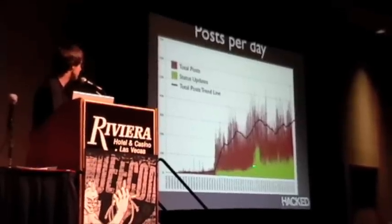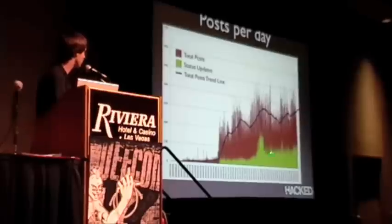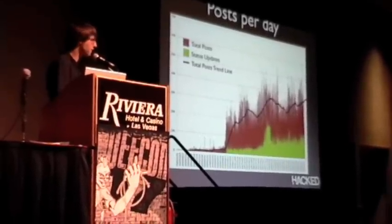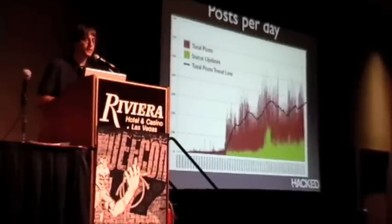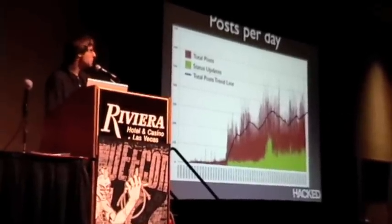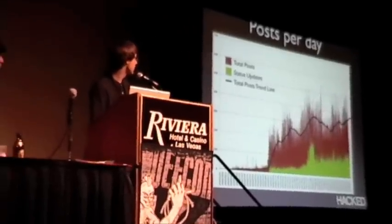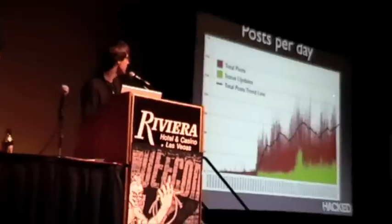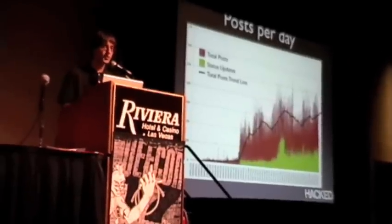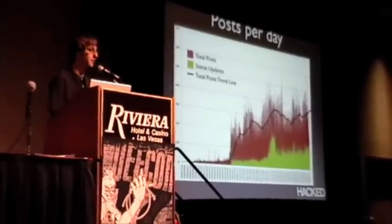Facebook introduced the ability to post statuses, but it didn't really catch on. Then they introduced the ability to comment on people's statuses, and all of a sudden people got crazy with that. This giant line where it breaks 600 — we found that two days before that, Facebook released the Facebook for iPhone app. So it took two days to hit network saturation for all the users in our data set to grab that app. They used it for a day and then dropped off really fast.